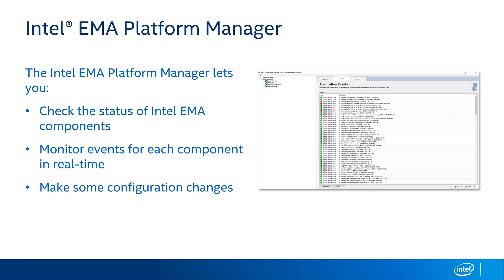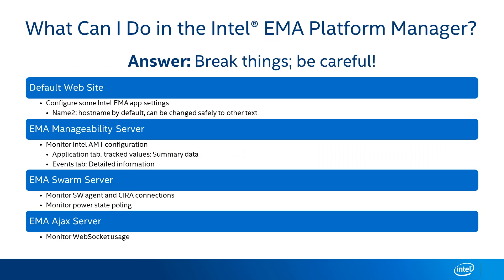One of the tools you'll use to keep track of what's happening in your Intel Endpoint Management Assistant environment is the Intel Endpoint Management Assistant Platform Manager. The Platform Manager lets you check on the status of the various components that make up the Intel EMMA solution, monitor events for each component — such as monitoring the configuration of Active Management Technology — and make a few configuration changes. What can you do with the EMMA Platform Manager? The answer is you can break things, so do be careful.